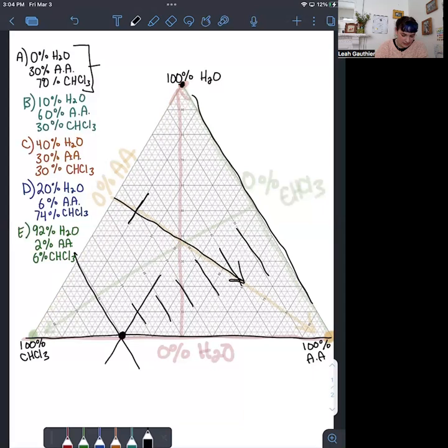So that point describes a mixture that would be 0% water, 30% acetic acid, and 70% chloroform.